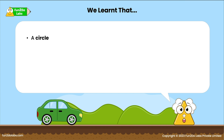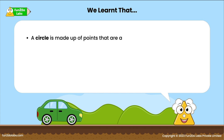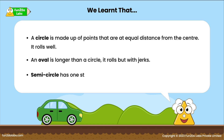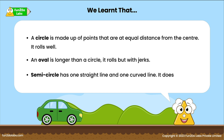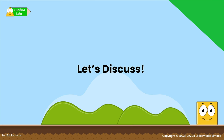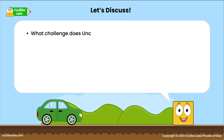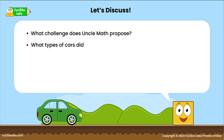Recap: a circle is made up of points that are at equal distance from the center — it rolls well. An oval is longer than a circle — it rolls but with jerks. A semicircle has one straight line and one curved line — it does not roll.